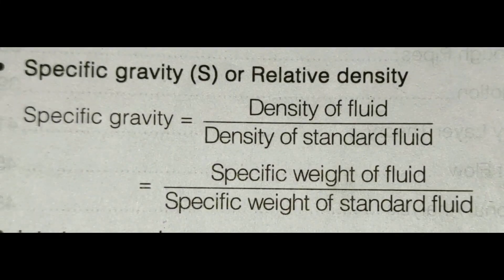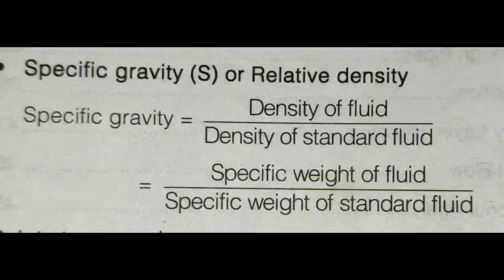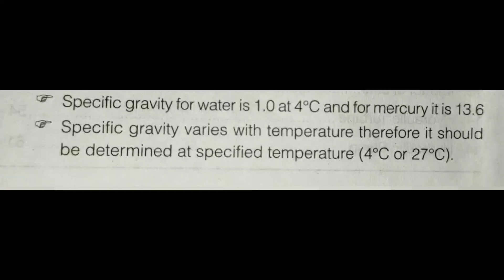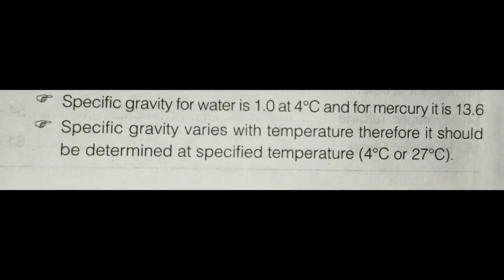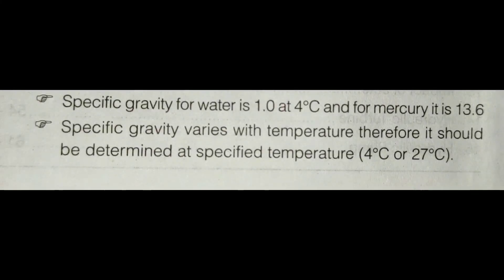Specific gravity, denoted by S, is also known as relative density. It is the ratio of density of the fluid to the density of the standard fluid, and can also be written as specific weight of fluid divided by specific weight of standard fluid. Remember: specific gravity of water is 1 at 4 degrees Celsius, and for mercury it is 13.6. Specific gravity varies with temperature and should be determined at a specific temperature.